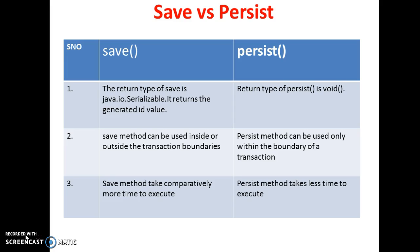The second difference is that the save method can be used inside or outside the transaction boundaries, but the persist method can be used only within the boundary of a transaction. That means save can be used across transactions, but persist can only be used within the same transaction.